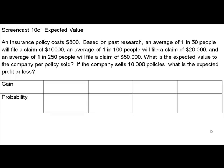Welcome to ScreenCast 10C, Expected Value. In this particular problem, we are going to deal with insurance policies that cost $800 apiece. Based on past research, an average of 1 in 50 people will file a claim of $10,000, an average of 1 in 100 people will file a claim of $20,000, and an average of 1 in 250 people will file a claim of $50,000.